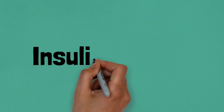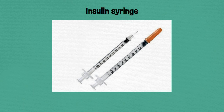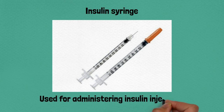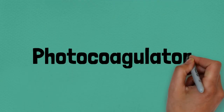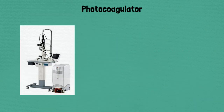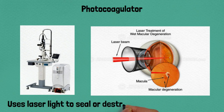Eighty-four: insulin syringe, used for administering insulin injections. Eighty-five: photocoagulator, uses laser light to seal or destroy blood vessels or tissues.